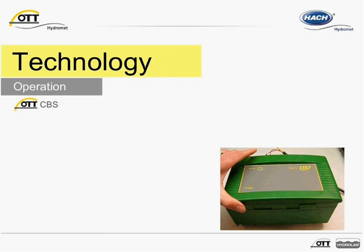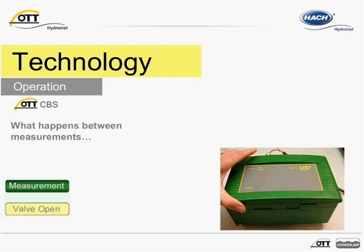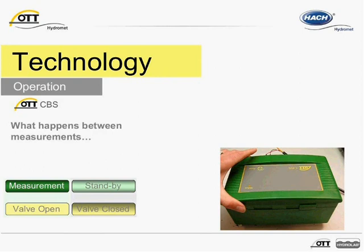One might ask: how does the unit maintain pressure in the measuring tube between measurements? The CBS is equipped with a differential pressure valve that opens and closes the entrance to either the measuring tube or vent for atmospheric pressure. When the CBS is not measuring, the valve closes off the entrance to the measuring tube. Also keep in mind that the bubble chamber attached to the end of the measuring tube in the water acts as a buffer. We'll take a more in-depth look at the bubble chamber in a few minutes.